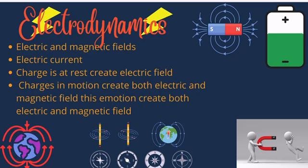The next part is electrodynamics, which is a very important part. Here we are going to learn how charges create electric and magnetic fields, and also how to analyze a circuit using electric current. Charges which are at rest create an electric field, whereas charges which are in motion create both electric and magnetic fields.